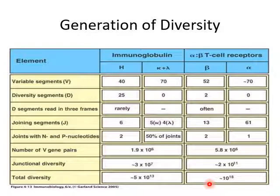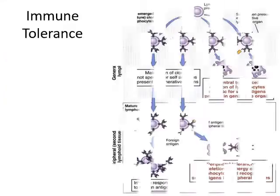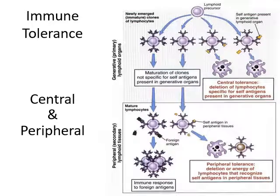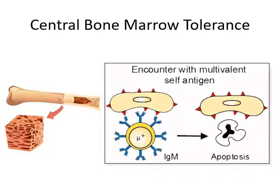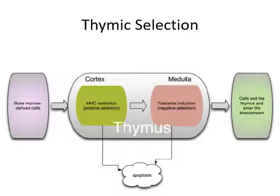Because such a large number of receptors are produced, it is quite possible that some of the receptors produced may react with self antigen. This leads to the concept of central and peripheral tolerance. Central tolerance begins in the bone marrow where all immune cells are generated and B lymphocytes mature.